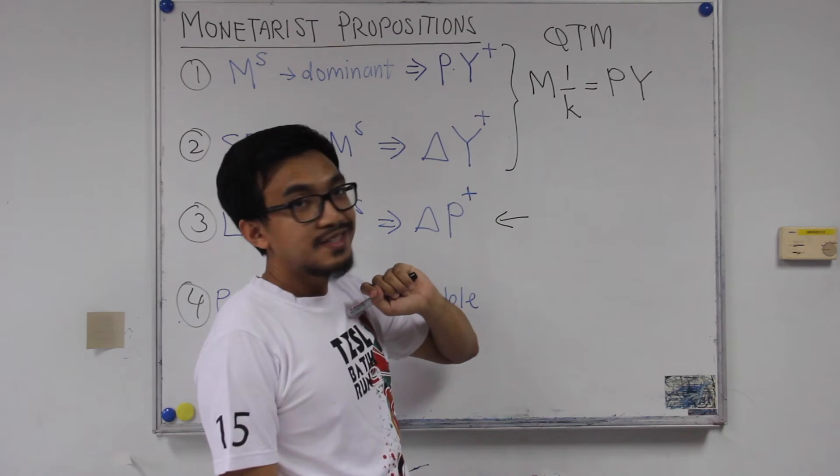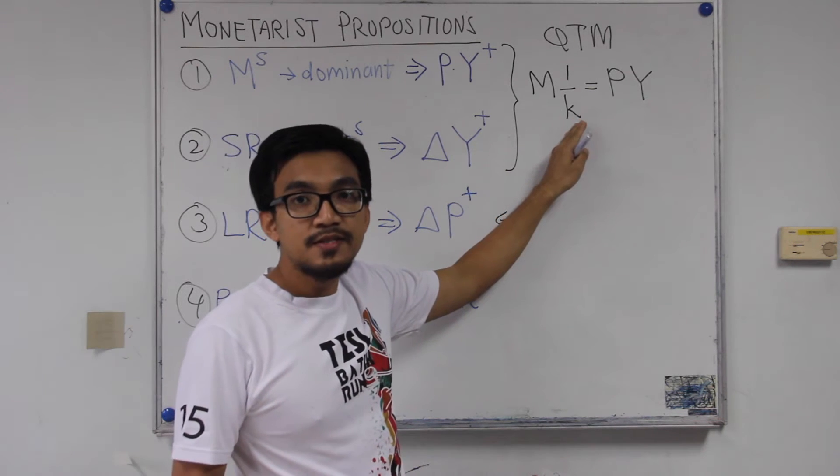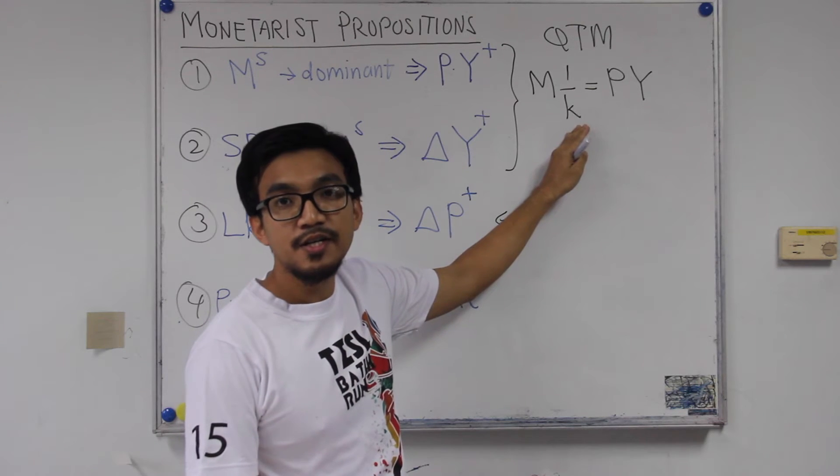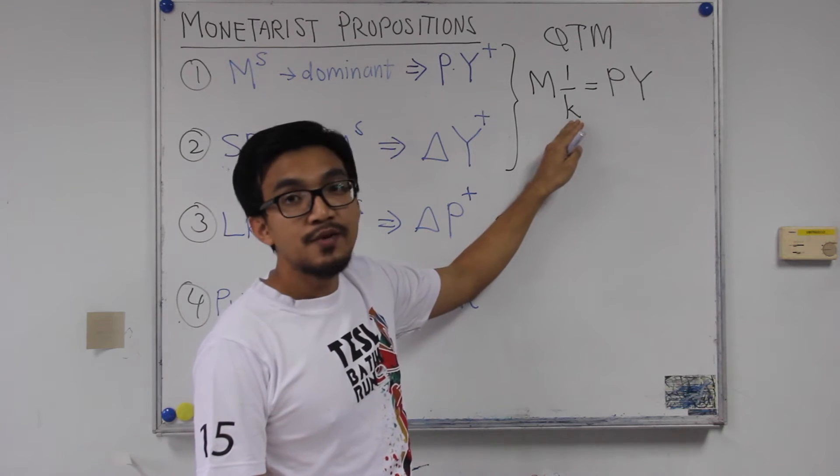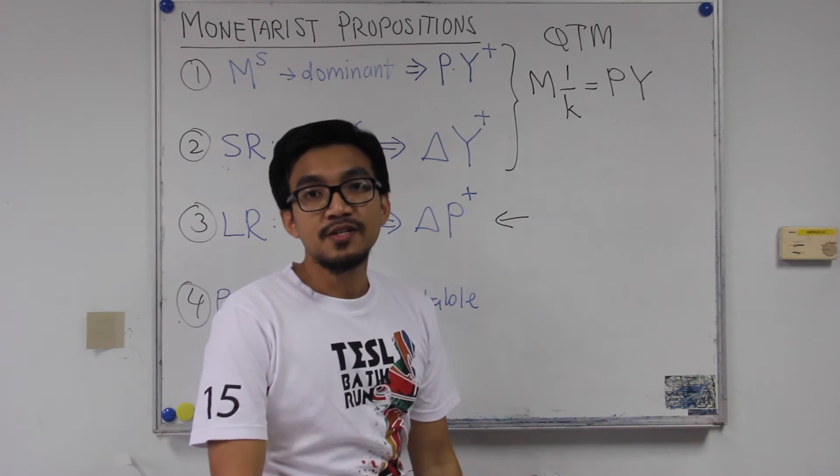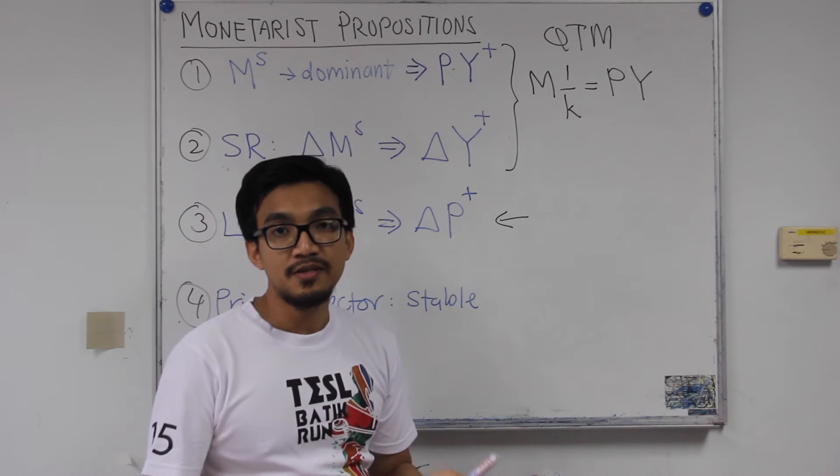So according to the classical previously, they believe that K is constant, is stable. So if you recall back from the Fisherian QTM, this K is just the reciprocal of velocity, or the turnover, how many times does a paper money change hands. So the classical believe that the velocity of money is actually stable is constant.